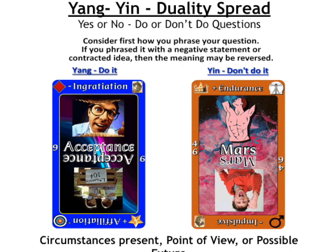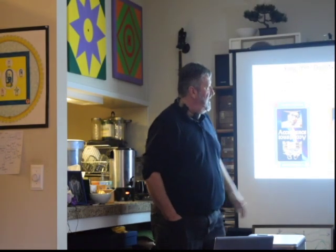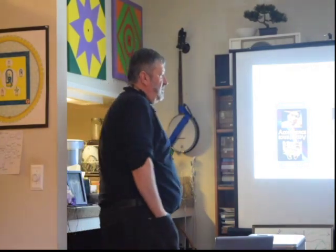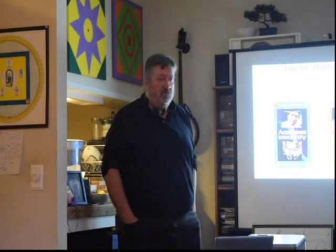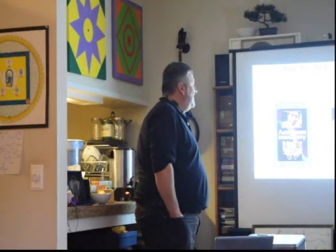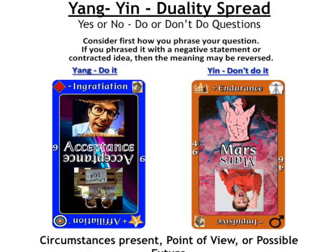When you look at that — for 'do it' you've got the goal of acceptance and the negative pull of ingratiation. In the 'don't do it' position, you have the body type of Mars and the positive pull of endurance. Based on that, any feelings or interpretations that come to mind? Someone said stick it out. If I do it, I could achieve acceptance, but I'll have to deal with some ingratiation — either in myself or in other people. If I don't do it, I will have to call on some endurance. So I see these as conditions — it doesn't make the choice for me.